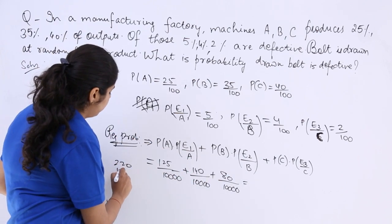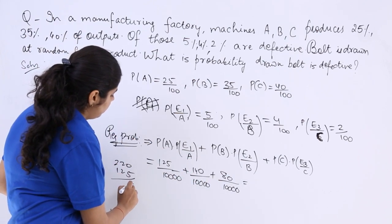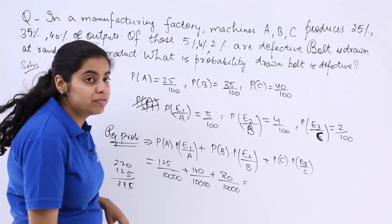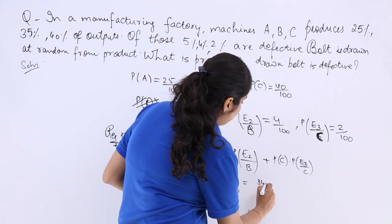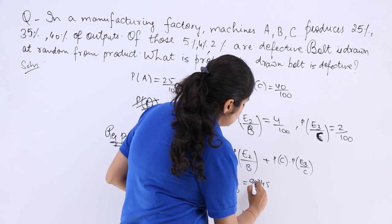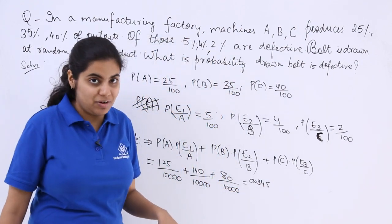Now, 220 plus 125. So, this makes 345. So, 345 and 0.0, so 0.0345 is the answer.